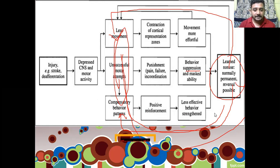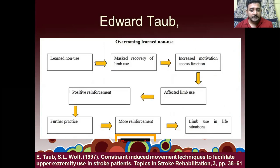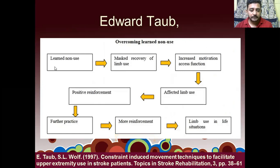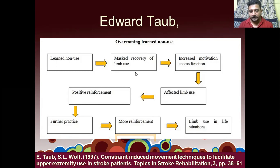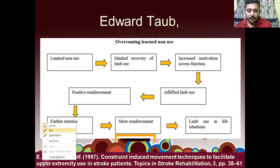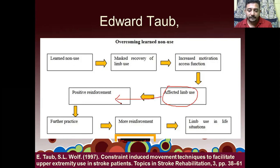These are the three major problems in stroke patients. They came up with a plan where learned non-use can be treated. Here is another flowchart: there is learned non-use — the patient is not using the upper extremity — because of which he has masked recovery of the upper limb. The normal recovery that is supposed to happen is being masked because he is not using it. So you have to encourage the patient to use it. When we interfere and increase the motivation to access functional activities for day-to-day life, the affected limb becomes a useful limb.